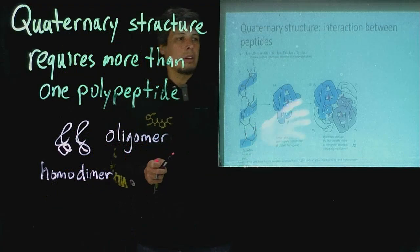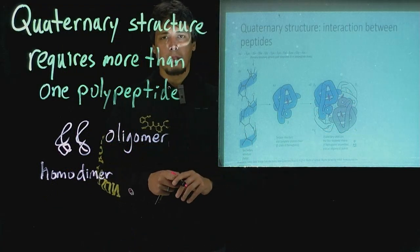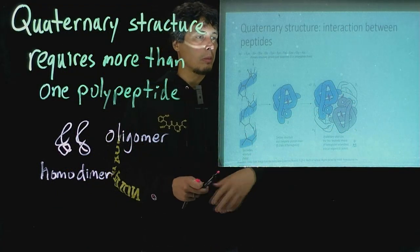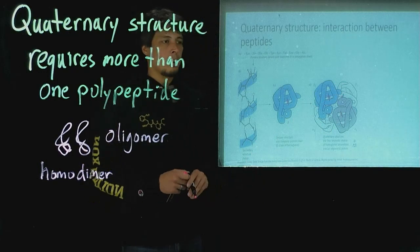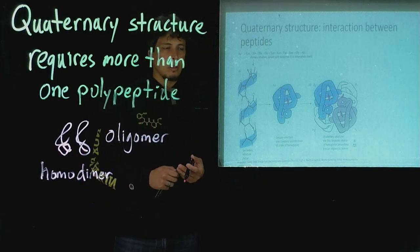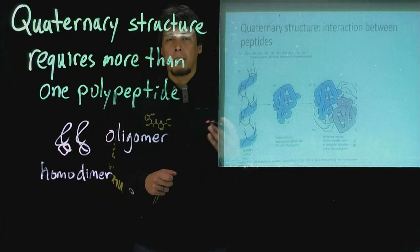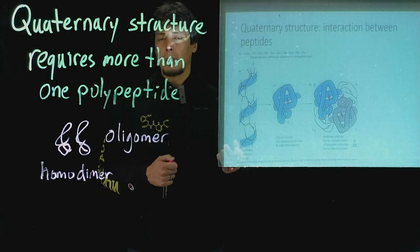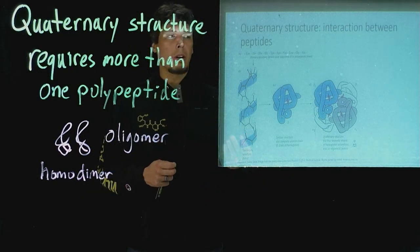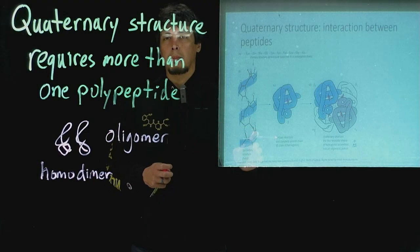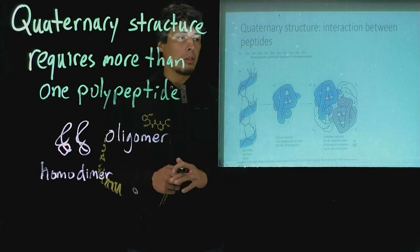In this structure here of hemoglobin, we'll talk more about hemoglobin later, but in the structure of hemoglobin there are alpha and beta subunits. The alphas are going to have almost identical amino acid sequence, while the betas are different in amino acid sequence.